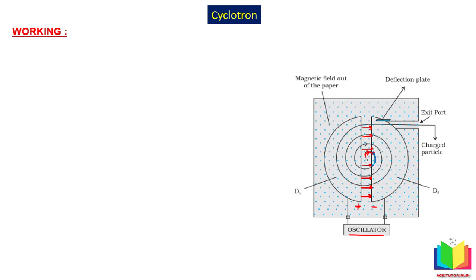Inside the D's, the particle is not accelerating because the electric field is responsible for acceleration and inside the D's the electric field is zero. But the magnetic field is acting, so it gives the particle circular motion. Just as the charged particle arrives at the gap again, using the voltage source we change the polarity — this D becomes negative and the other positive. So the direction of electric field in the gap reverses.